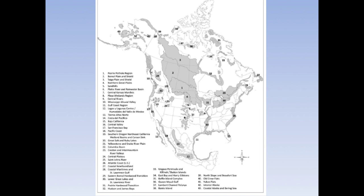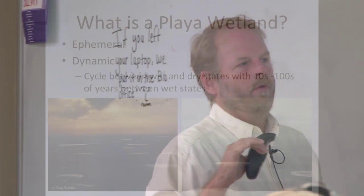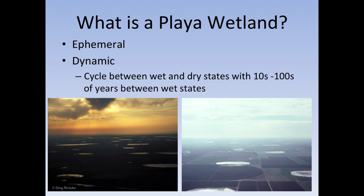Unfortunately, conservation has struggled, and one of the reasons is because playas are ephemeral. All wetlands are ephemeral by definition, but playas take it to another step. Those familiar with wetlands probably know the prairie potholes in the northern Great Plains — the duck factory — which have a typical 8 to 15 year wet-dry cycle. Well, playas do that on an annual basis. They cycle between wet and dry states, and sometimes the dry state will last for tens to hundreds of years. It's a very different type of wetland system.